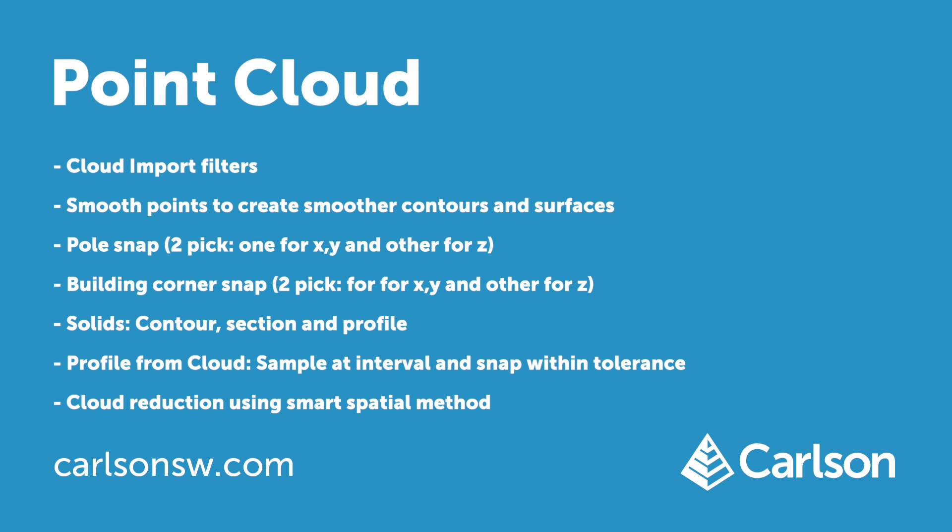Point cloud input has a new method to filter points on import, which is very handy when the source data needs cleanup. There is a new smooth points routine that uses a moving least squares method for smoother contours even from noisy data. Pole snap is a new point method where you pick once on the pole to get the XY center and pick a second point to set the elevation. Building corner snap is another new point method where you pick on one wall and then the other — the program finds the best fit planes on both walls and intersects them to find the corner, then you pick to set the elevation.